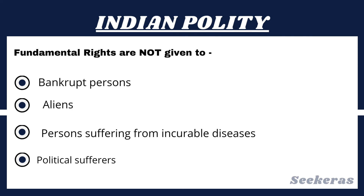Question number 15. Fundamental rights are not given to: Option 1, Bankrupt persons; Option 2, Aliens; Option 3, Persons suffering from incurable diseases; or Option 4, Political sufferers. The answer is Option 4, Political sufferers. Political sufferers are those people who are victims of political manipulation, political games, political strategies, etc. The highest number of such victims are created due to vote bank politics. Once people become aware of these political games, they will lose their ground. Thank you for watching our video.